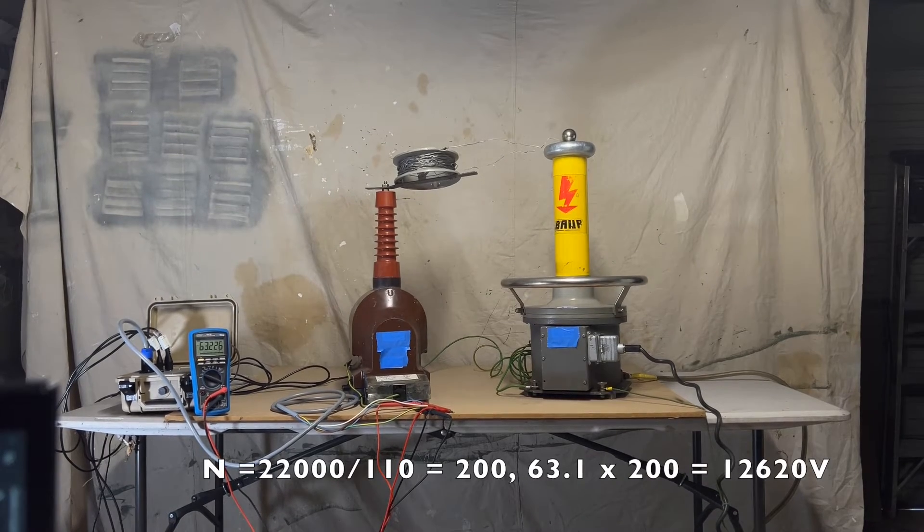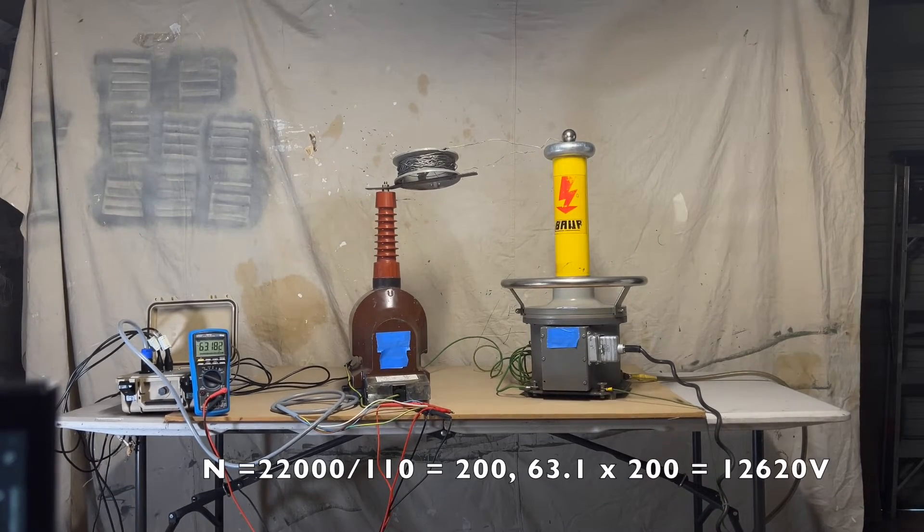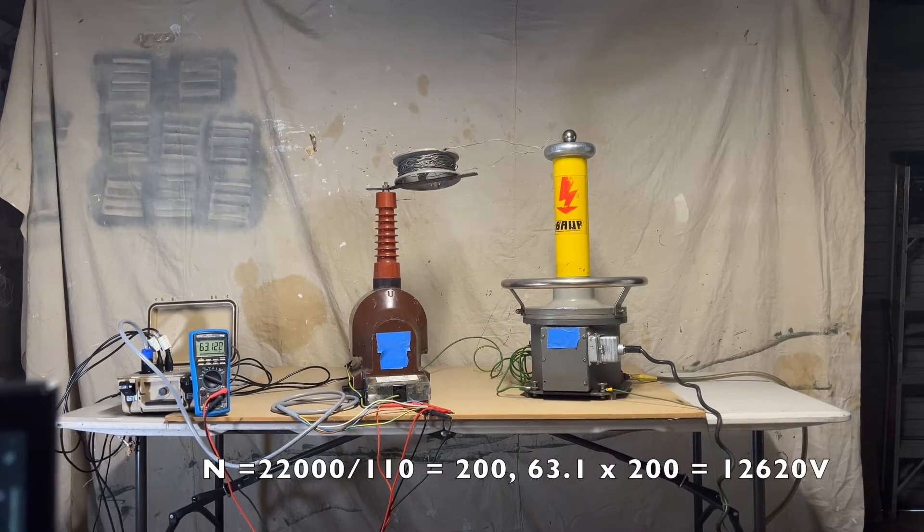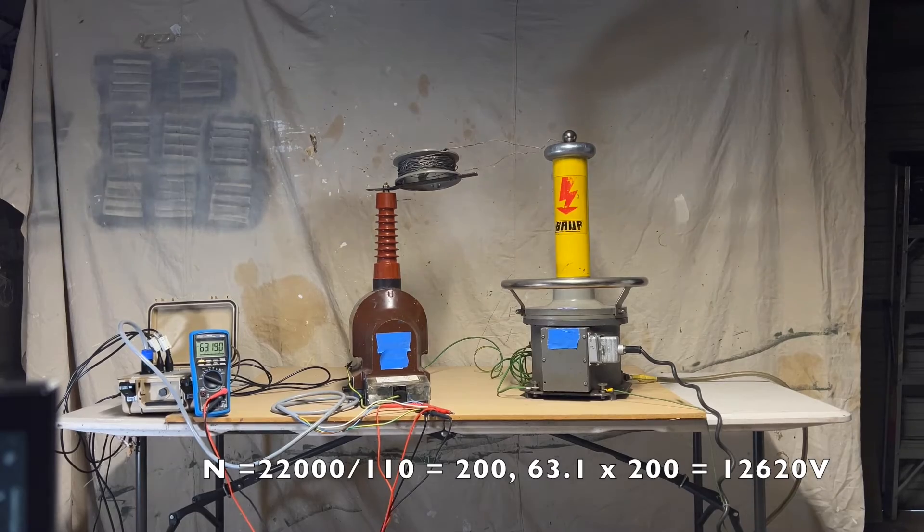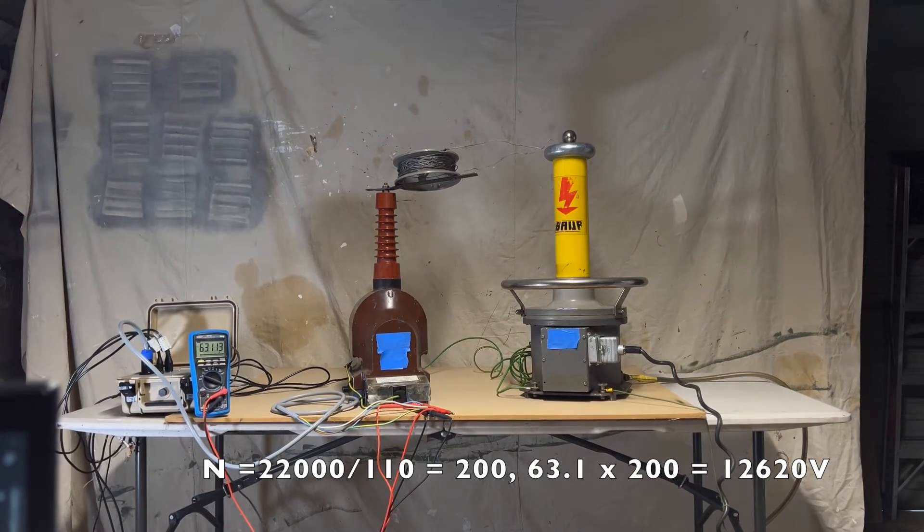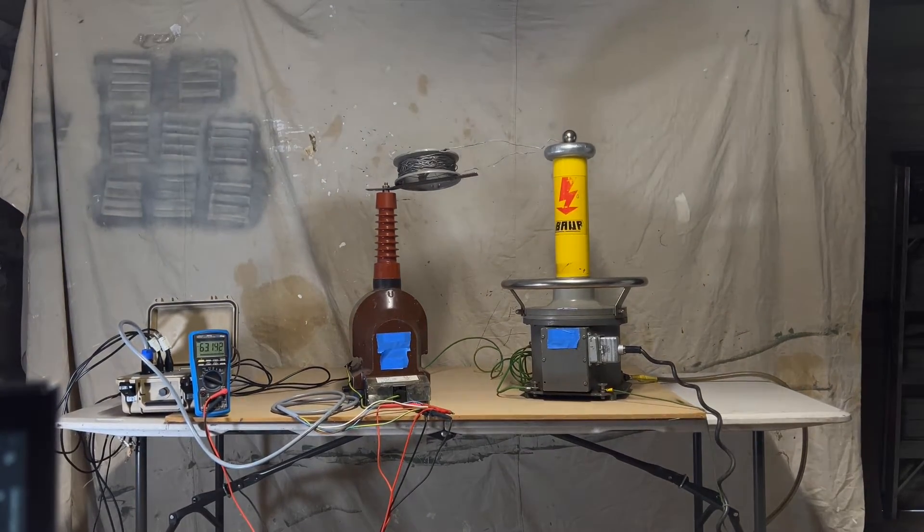So this is 22,000 on root 3 to 110 on root 3. So 63.1-ish equates to 12,700 volts on the top of the wire there at the top of the coil.